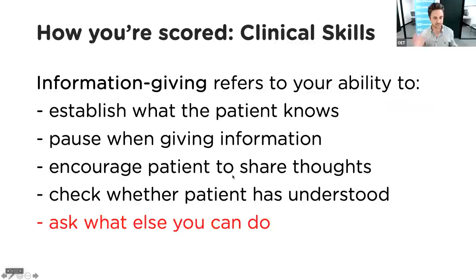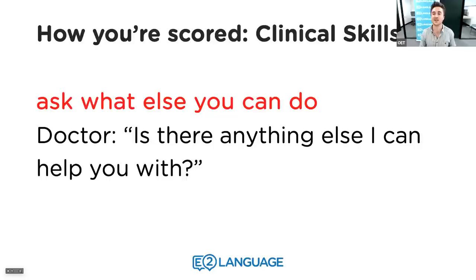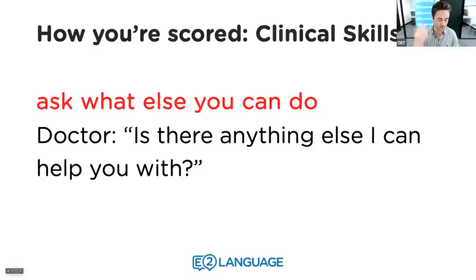The last information giving sub-skill is asking what else you can do: 'Is there anything else I can help you with? Do you have any final questions?' That's how you basically end the role play. Meanwhile, throughout everything, you're using good grammatical structures, a wide range of vocabulary, natural phrases, speaking at an appropriate speed, and maintaining clear pronunciation.